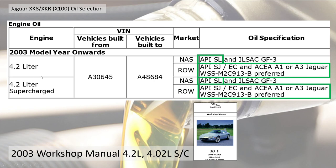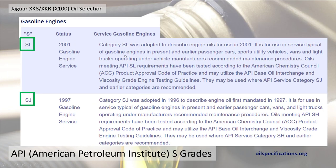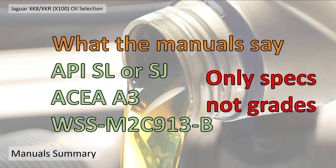Interestingly, the 4.2 litre and 4.2 litre supercharged seemed to have the same specifications. My abbreviation NA is North America and ROW is rest of the world, which includes the UK. So WSS-M2C913-B or ACEA A3 seemed to be the ones to be looking for. API SL is current in the American Petroleum Institute specs, and SJ is also current. So the conclusion was: I need to be looking for API SL or SJ, ACEA A3, or WSS-M2C913-B.